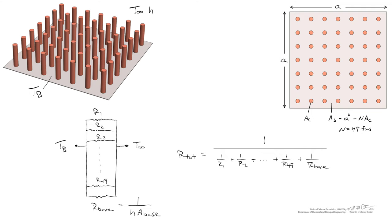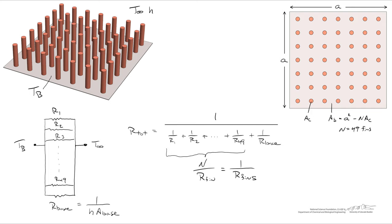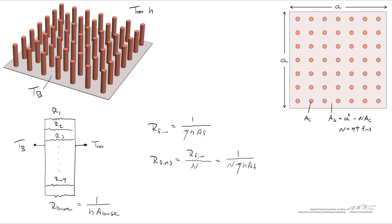Because we're dealing with 50 resistances in parallel, let's simplify. We can take all of the fins and combine them — since R1 through R49 are all identical fins, we write: N divided by the resistance of each individual fin. This gives us R_fins equal to the resistance of a single fin divided by the number of fins, which equals one divided by (N times eta times h times A_fin). By doing this, we've made our life a great deal easier, because we can just say heat escapes either from the base or from all the fins combined using this total fin resistance.